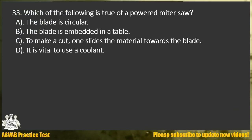Question 33. Which of the following is true of a powered miter saw? A. The blade is circular. B. The blade is embedded in a table. C. To make a cut, one slides the material towards the blade. D. It is vital to use a coolant.